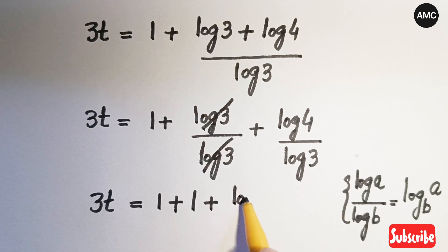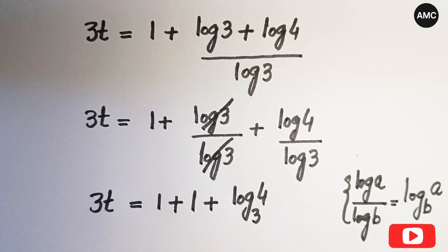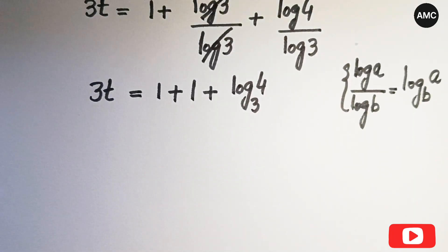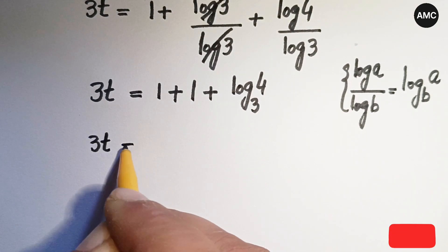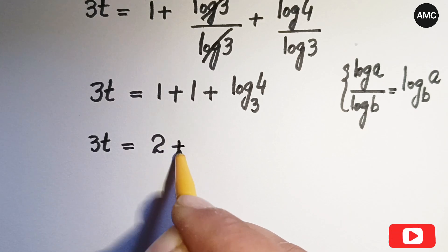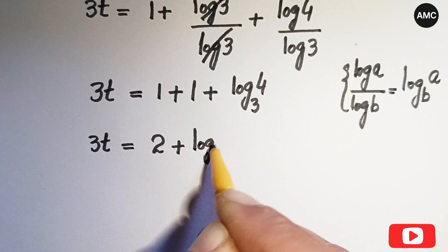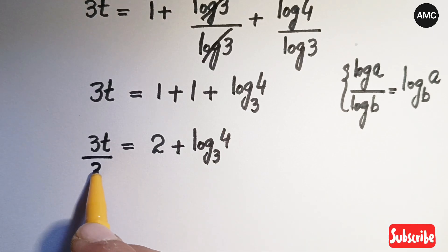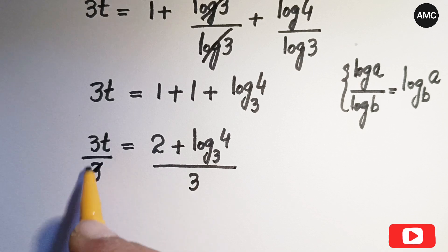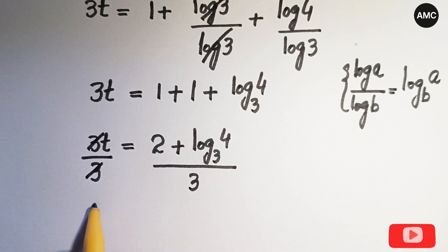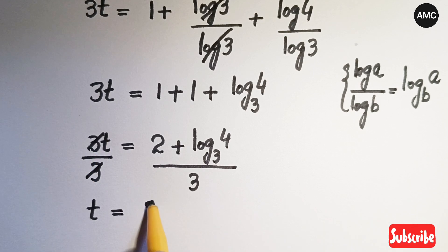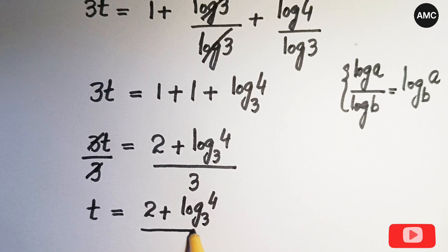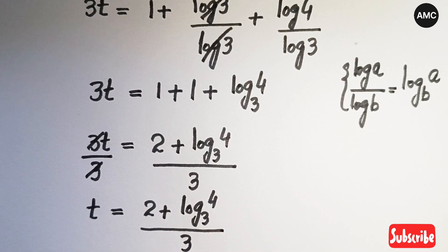So 3t equals 1 plus 1 plus log base 3 of 4, which is 2 plus log base 3 of 4. Dividing both sides by 3, the 3 cancels on the left, giving us t equals 2 plus log base 3 of 4, all over 3. This is our final value of t.